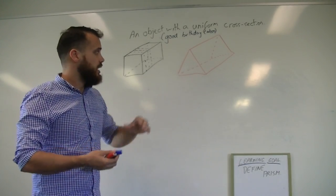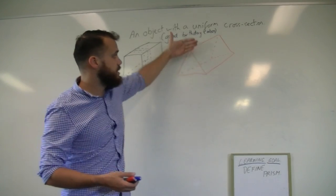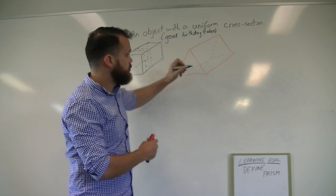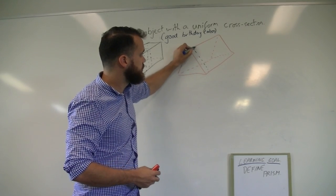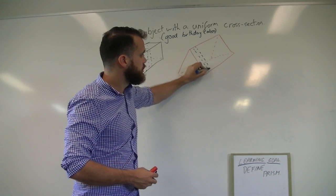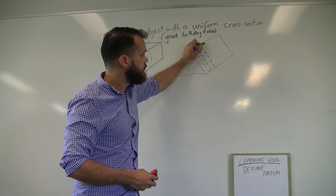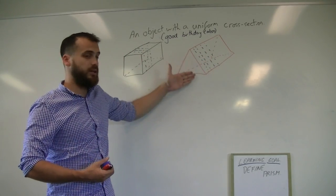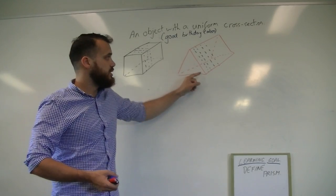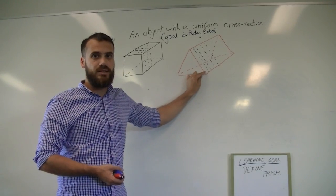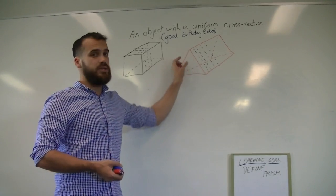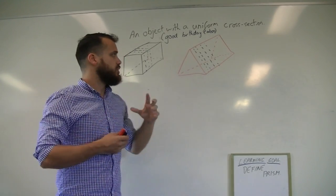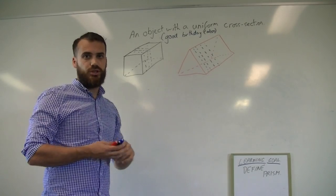This is also a prism — it's a triangular prism. And the easiest way to cut that would be to again cut it this way. Everyone's going to get a triangular piece. Now, if you cut it the other way, you'd end up with someone getting a tiny little piece here and then whoever gets the middle slice will get this enormous piece. So a prism has a uniform cross-section.